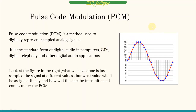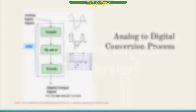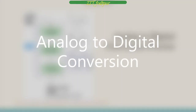If you look at the figure on the right, what we have done is the sampling of the signals. Now, what values will be assigned to that sample and how it will be transmitted all comes under Pulse Code Modulation. Let us now look at the analog to digital conversion process.